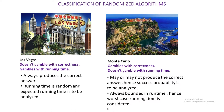In Las Vegas algorithms, there is no gambling with correctness — they always produce the correct answer. The running time is a random variable, so we analyze the expected running time. Monte Carlo algorithms may or may not produce the correct answer — we gamble with correctness. We analyze the probability of success. The running time of Monte Carlo algorithms is bounded; we find the worst-case running time.